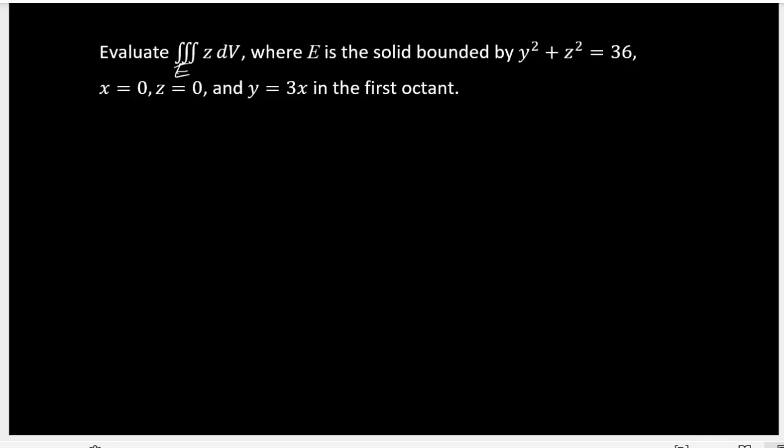To evaluate the triple integral over the solid bounded by y squared plus z squared equals 36, x equals 0, z equals 0, and y equals 3x in the first octant.